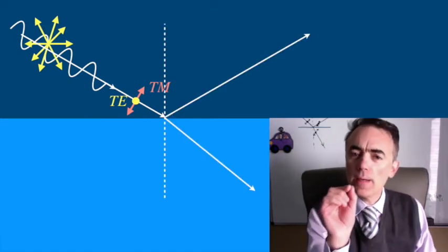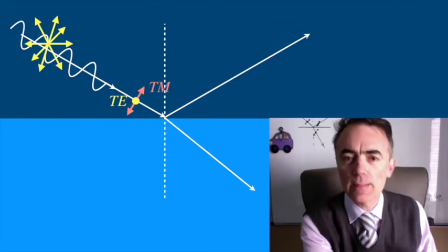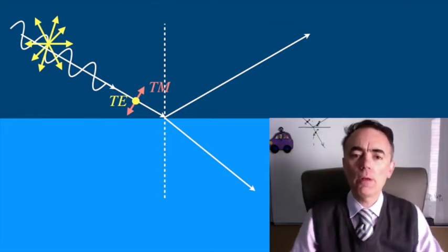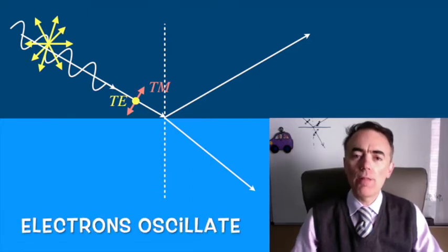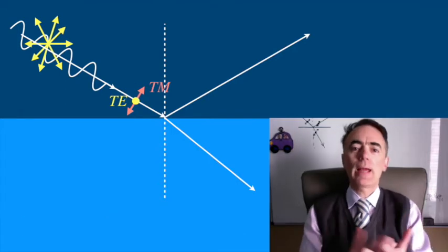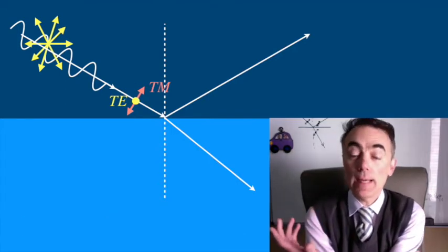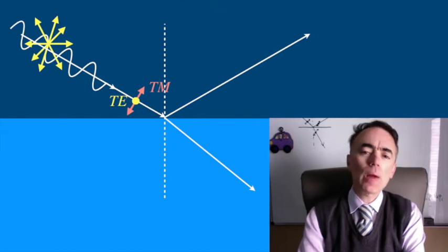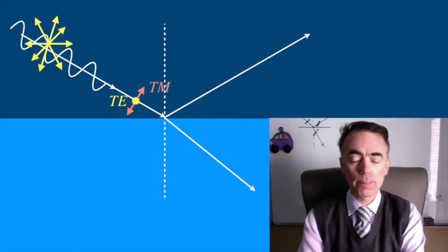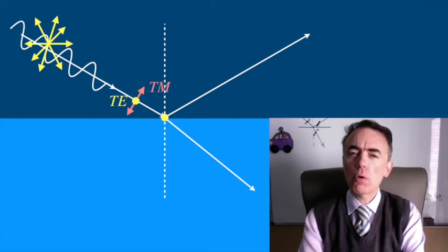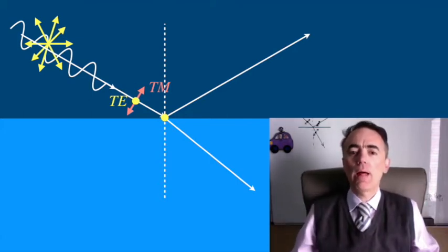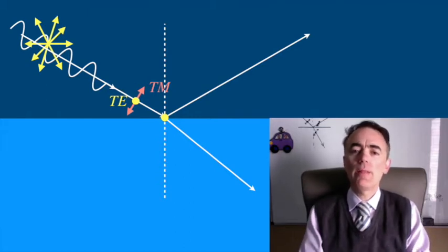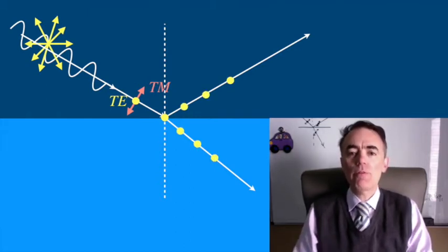Now let's look at the interface at the point where the incident beam of light hits. In hitting the medium, the electric field of the EM waves makes the electrons of the medium oscillate. These electrons also create an oscillating electric field that will interact with that of light. For the TE polarization parallel to the plane of the interface, electrons are free to oscillate and that polarization will propagate in the refracted and in the reflected beams.